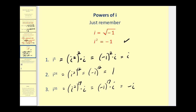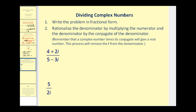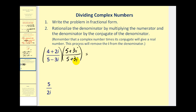Let's go ahead and finish by talking about the division of complex numbers. We will first write the problem in fractional form, and then we will rationalize the denominator by multiplying the numerator and denominator by the conjugate of the denominator. In order to divide these two complex numbers, we multiply by the conjugate of the denominator. The product of these conjugates should be a real number.